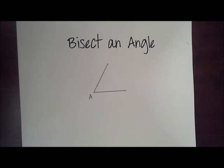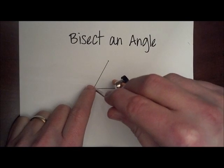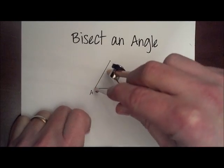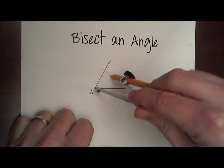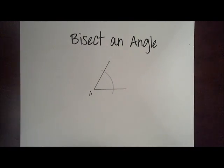Hey guys, up next, construction number three of our review is bisecting an angle. We're going to take our compass, and with it open to a convenient amount that will intersect both sides of our given angle A, we construct this arc.